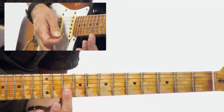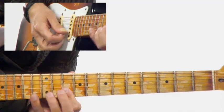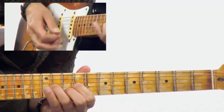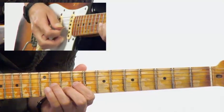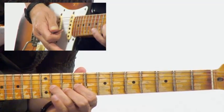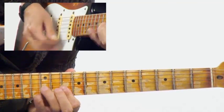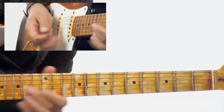I'm hammering on, barring at the 10th fret on the top two strings. Hammering on the B, then to the G, then playing like an A shape—the E and the A here. Then I'm hammering on the F# and the D. Let's do that again.